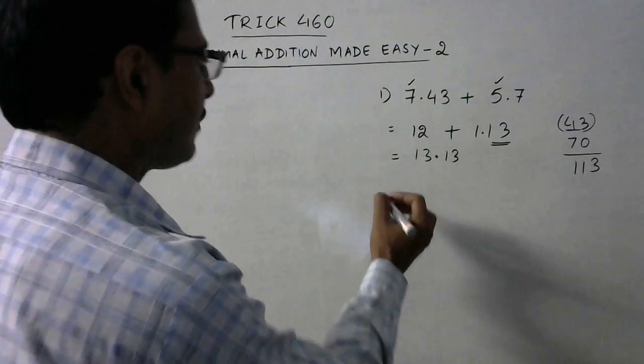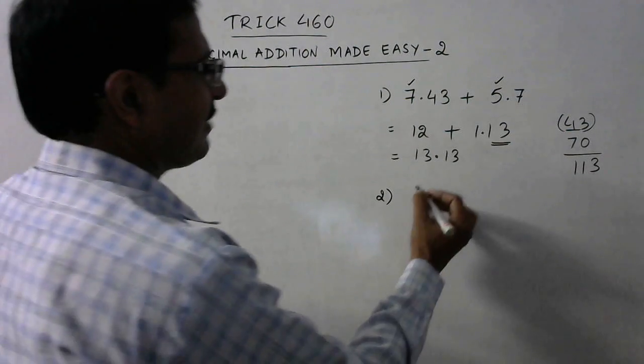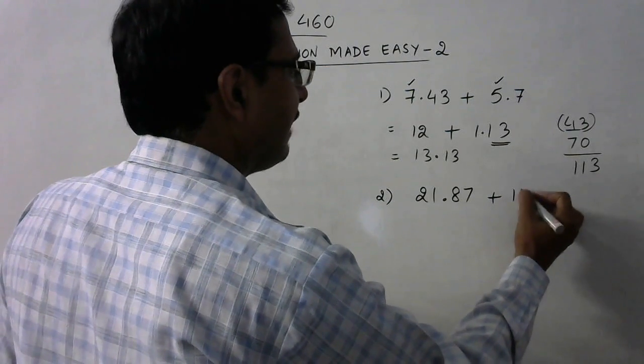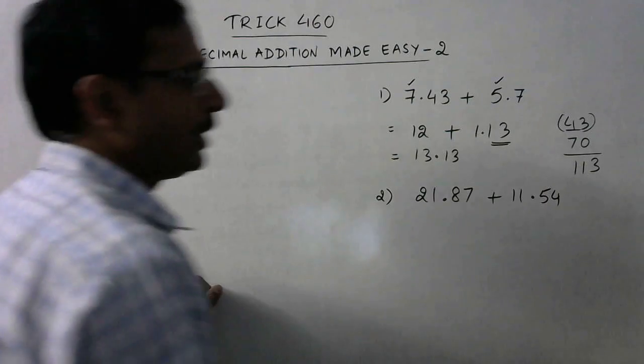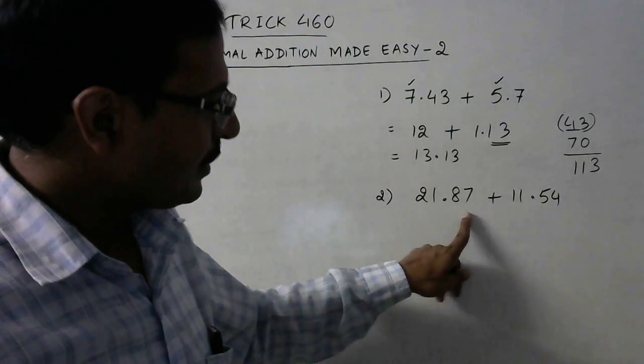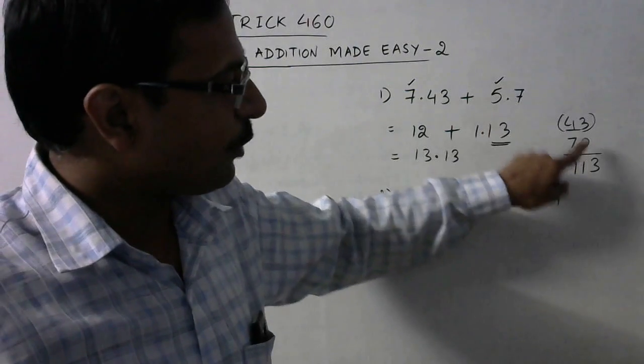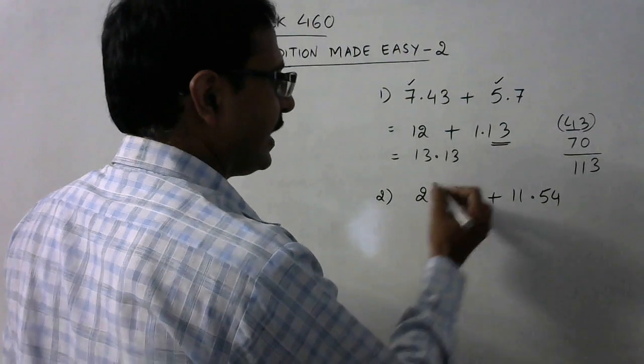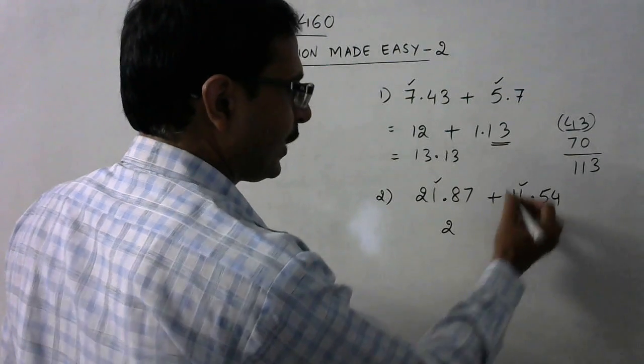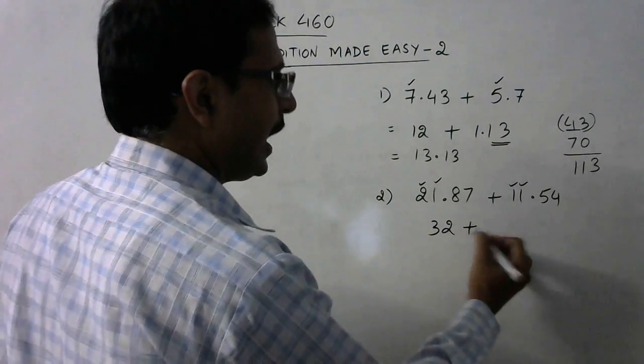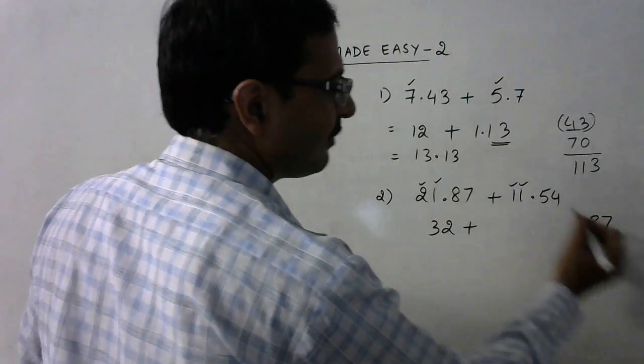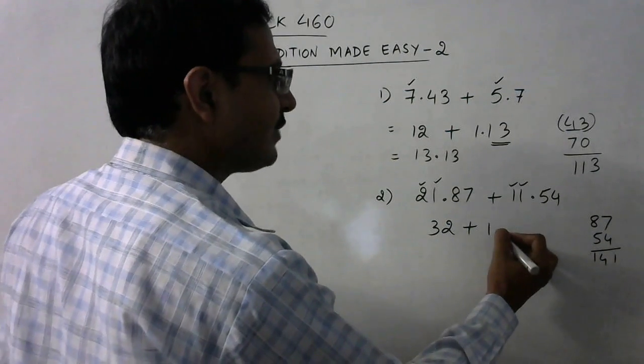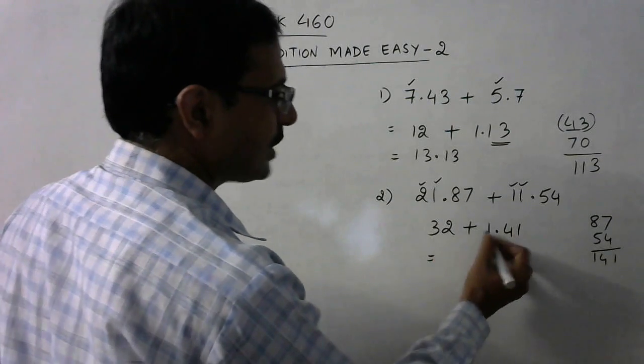Let's take one more example. So this time we have 21.87 and say we have 11.54. Now here the number of digits is same, so it eliminates the step of putting zeros. Now we don't need to put zeros, so all we need to do is add the number before the decimal place. So 1 plus 1 is 2, and 1 plus 2 is 3. And now 87 here, two digits, and 54 here, just add them, so 141.